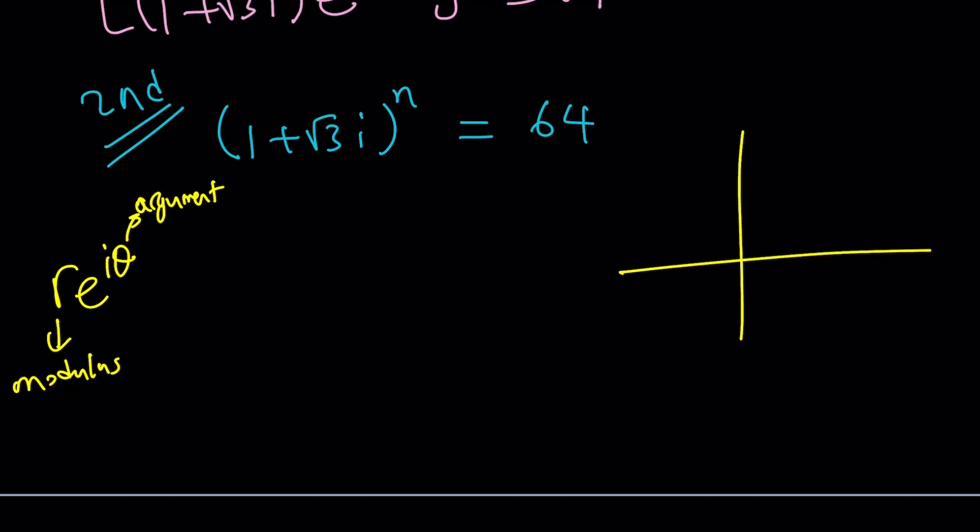So how do you find that information? If you think about 1 plus root 3i it's just going to be 1 unit this way and root 3 units that way. So it's going to be like a vector. This is 1. This is root 3i and now we have an angle that can be defined as pi over 3 radians. It's kind of like a 30-60-90 triangle. So the argument is going to be pi over 3. And what is the modulus? From the Pythagorean theorem it's 2. It's going to be 2 times e to the power i times pi over 3.